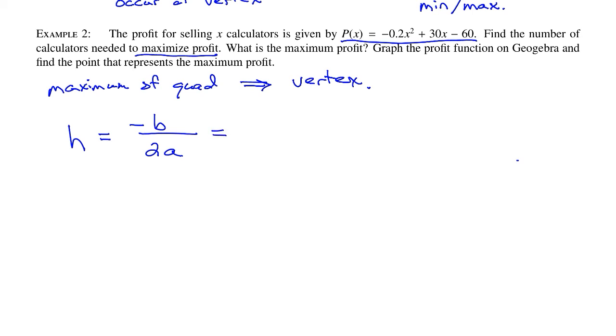So this is going to be -30 divided by 2(-0.2). If you work that out, that is 75. But is it $75 or 75 calculators? Well, this comes from interpreting what the problem says and how the variables were set up. So selling the profit from selling x calculators is given by P. P is in dollars. X is in calculators. This is an x value. So this is 75 calculators. So in order to maximize the profit, then we need to sell 75 calculators. This is probably on a monthly basis.